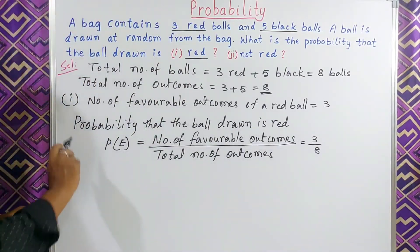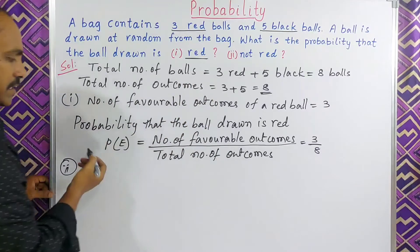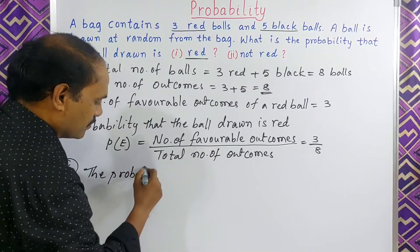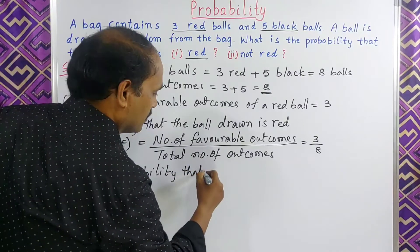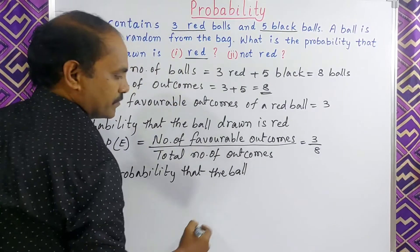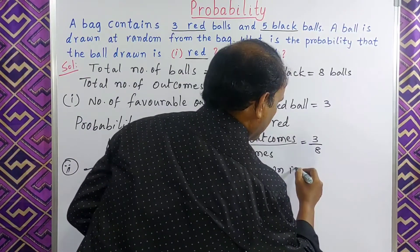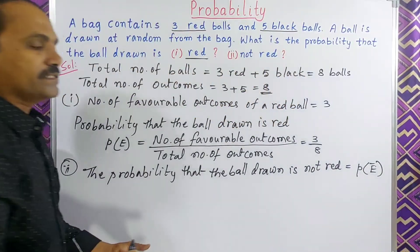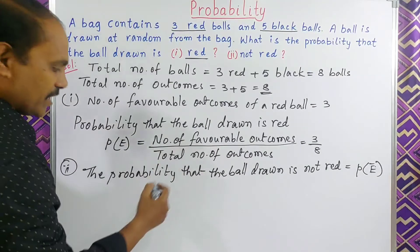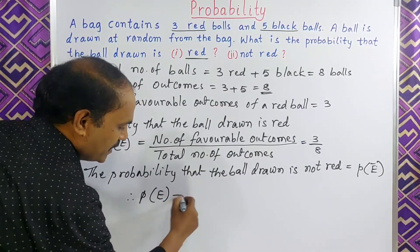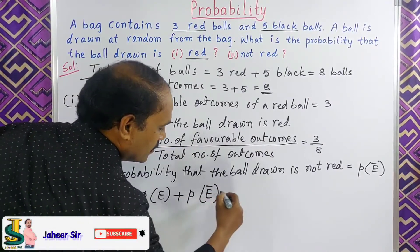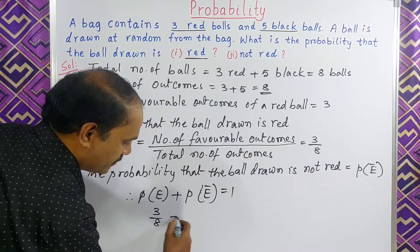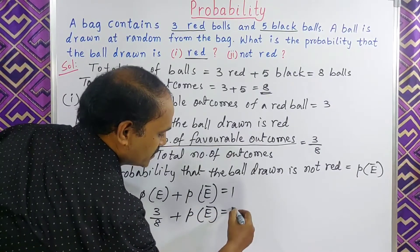And then the next one — not E. What does not E mean? Here P of E is red. So not E is the probability that the ball drawn is not red. If we take P of E bar, not E means it is complementary to P of E. We already know that P of E plus P of E bar is equal to 1. Substituting the value: 3 by 8 plus P of E bar is equal to 1.